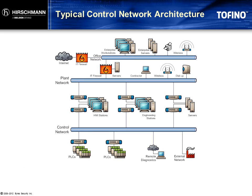Let's look at an example of how these problems can start and spread so quickly. This is a simplified diagram of a typical control system where the PLCs and sensors are connected to a control network that is isolated from the main plant network by dual-homed PCs. The plant network, in turn, is isolated from the enterprise network by a firewall. Finally, the enterprise network is isolated from the internet by another firewall.